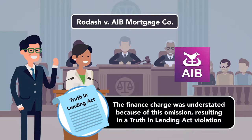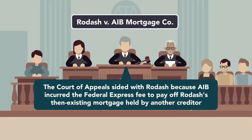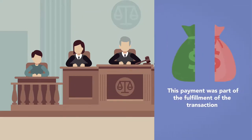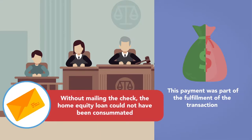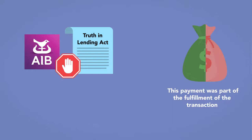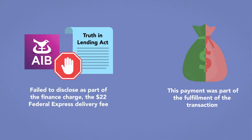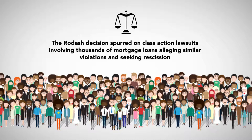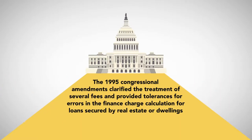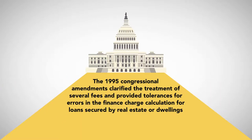The finance charge was understated because of this omission, resulting in a Truth in Lending Act violation. The court of appeals sided with Rodash, because AIB incurred the Federal Express fee to pay off Rodash's then-existing mortgage held by another creditor. This payment was part of the fulfillment of the transaction, and without mailing the check, the home equity loan could not have been consummated. AIB therefore violated the Truth in Lending Act by failing to disclose, as part of the finance charge, the $22 Federal Express delivery fee. The Rodash decision spurred class action lawsuits involving thousands of mortgage loans, alleging similar violations and seeking rescission. To address these concerns, the 1995 Congressional amendments clarified the treatment of several fees and provided tolerances for errors in the finance charge calculation for loans secured by real estate or dwellings.